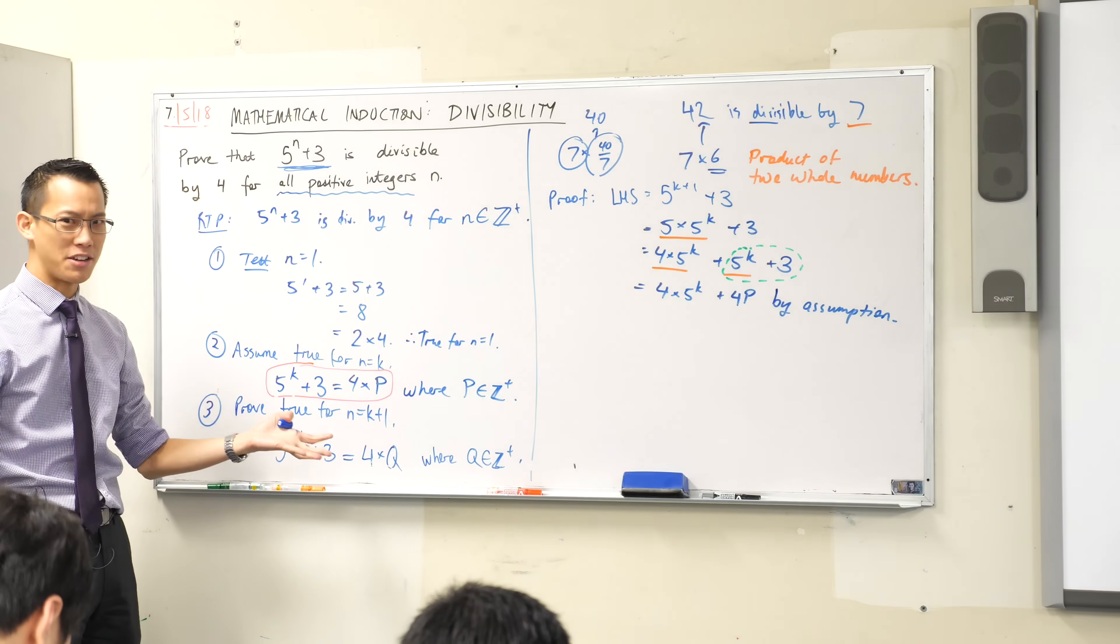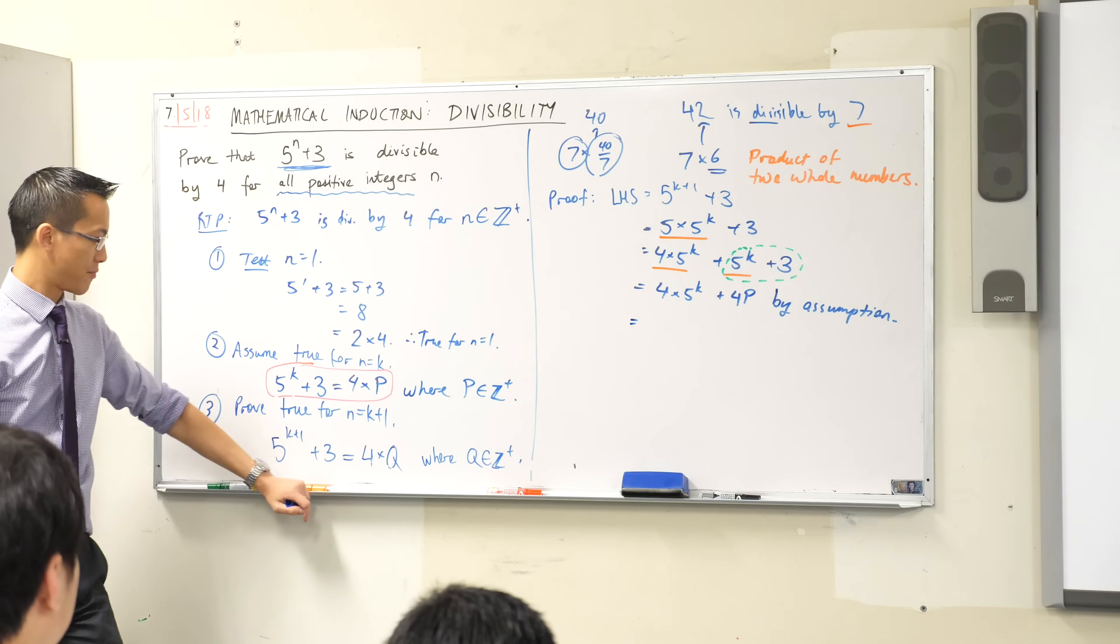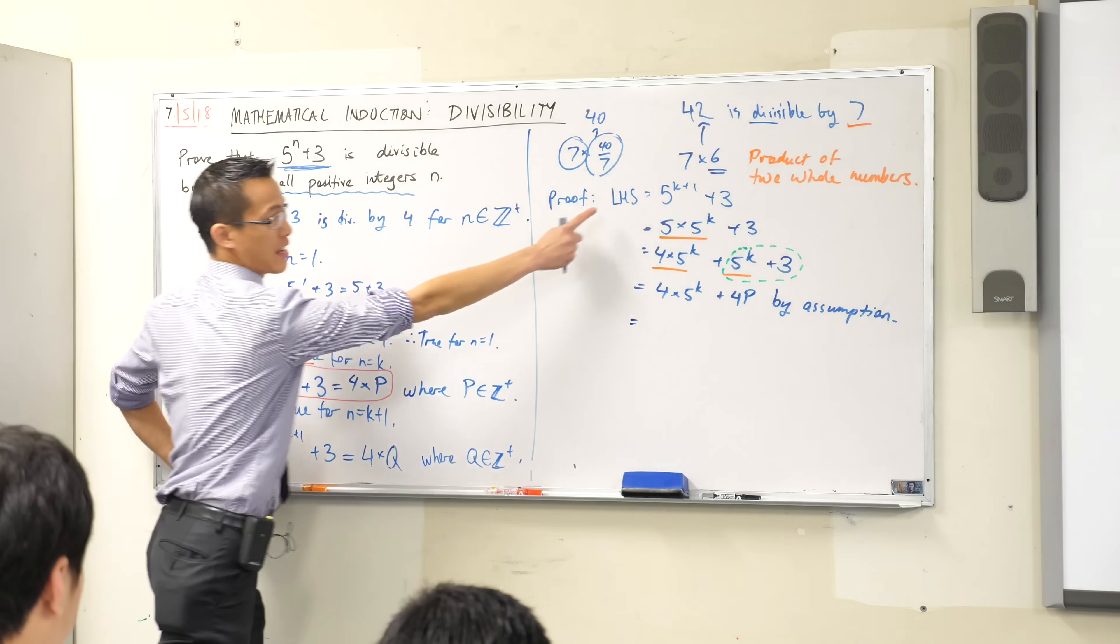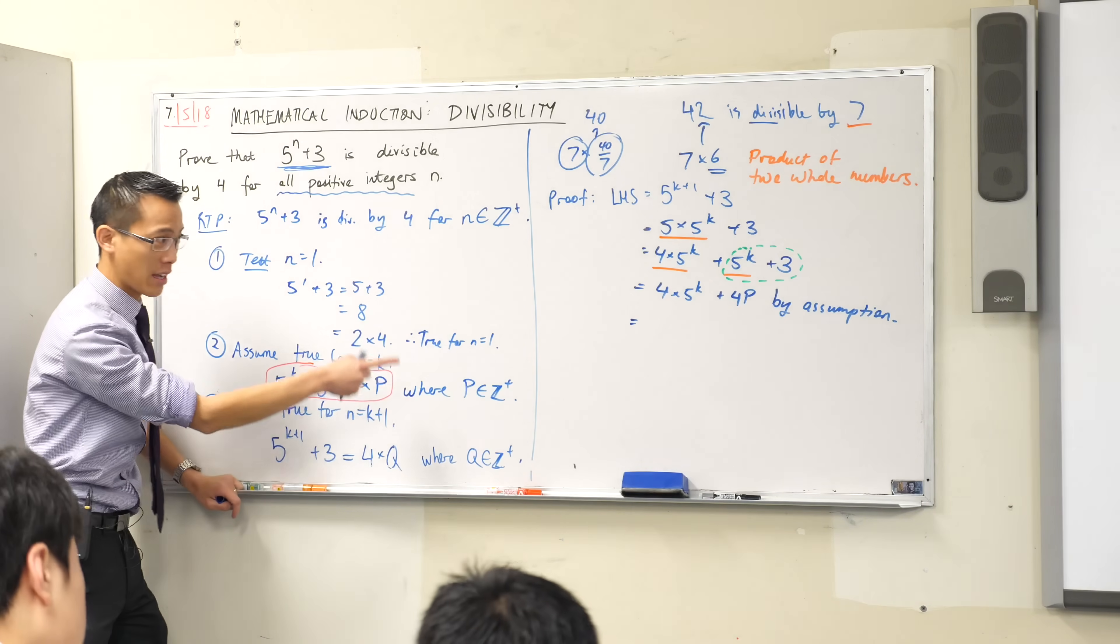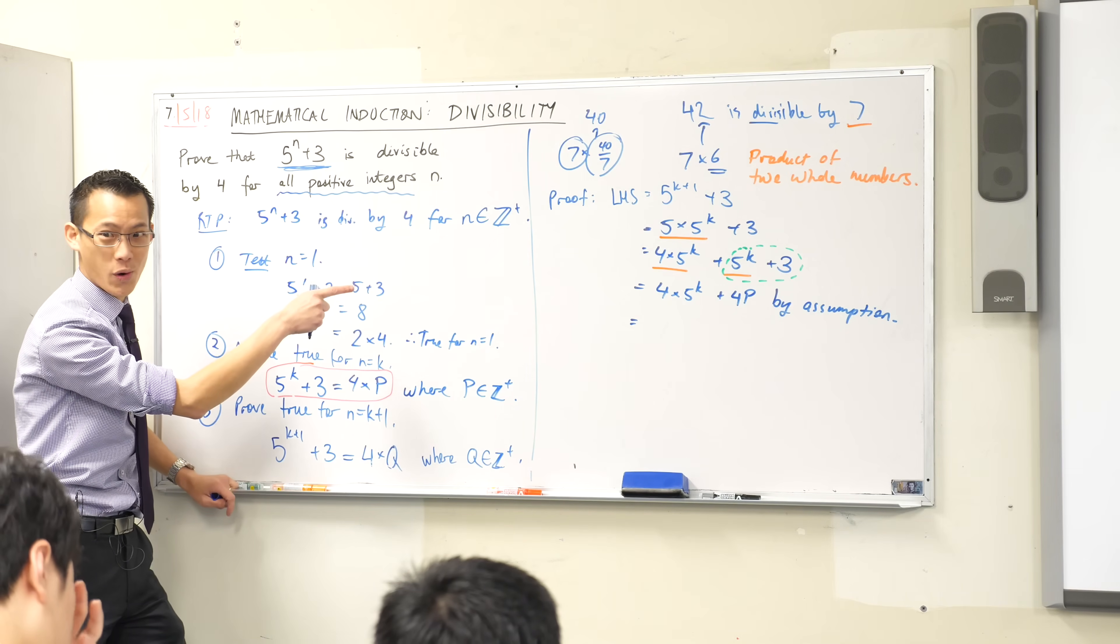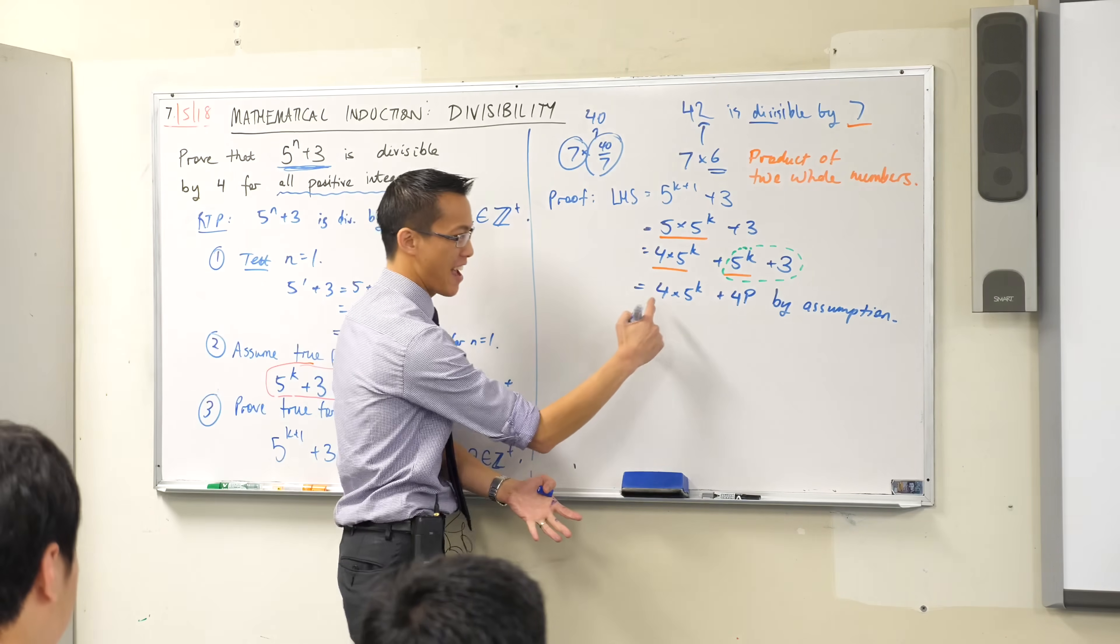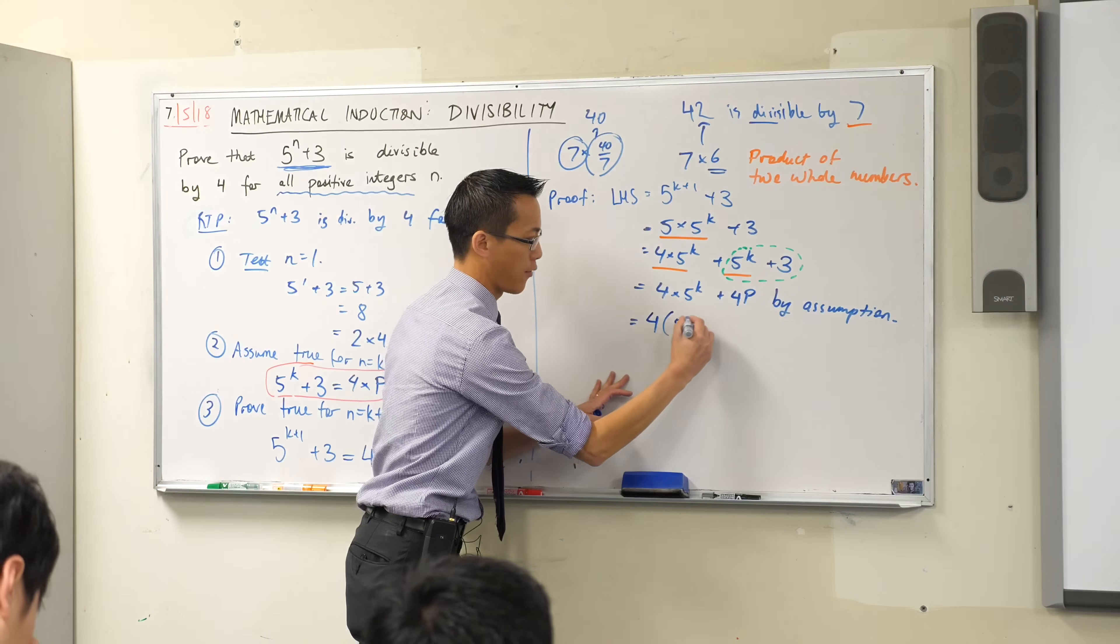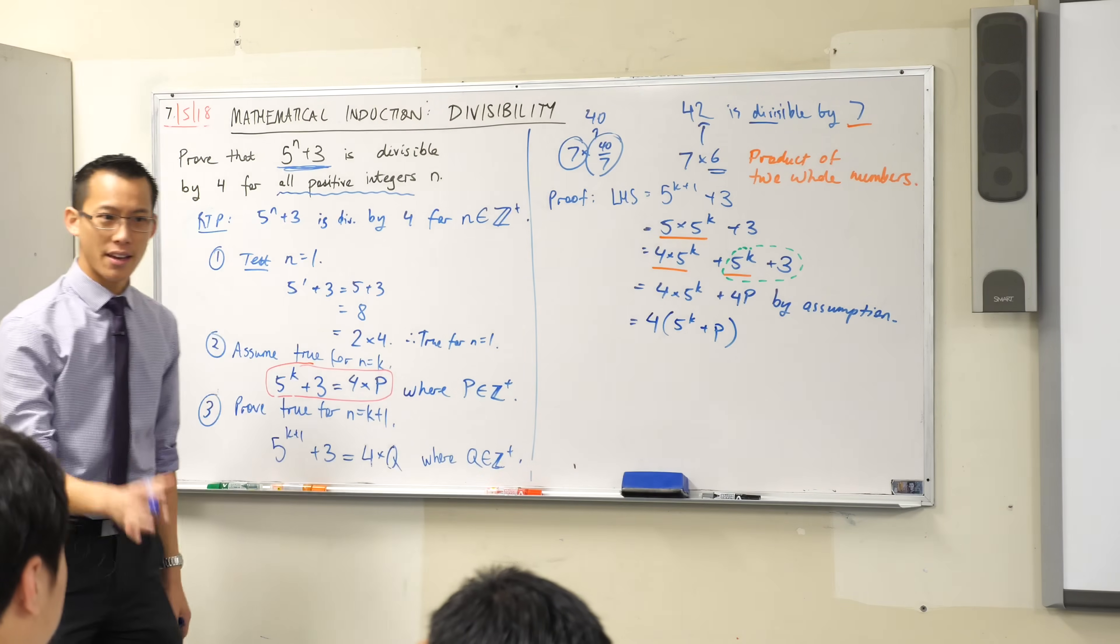Now, are you almost there? Do I need to push a little bit further on this? What was my goal in the end? Have a look. I've written it right down the bottom here. I want to show that this thing, the left-hand side, is 4 times a positive integer. Can I do that here? What would I do? Can you give me one word? Maybe start with an F. I'm going to factorize, right? Everything has a 4 on it. 4 times what's going to be left? 5 to the k plus p.